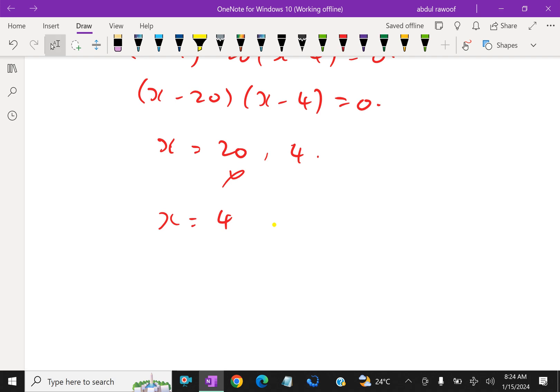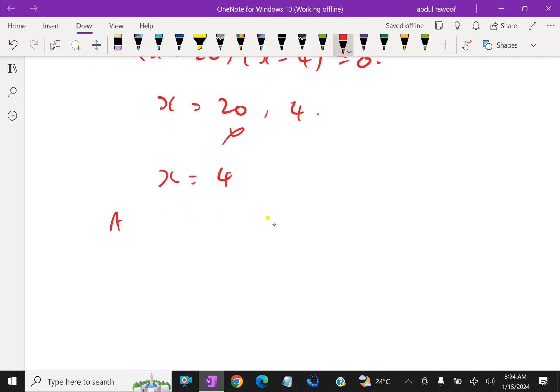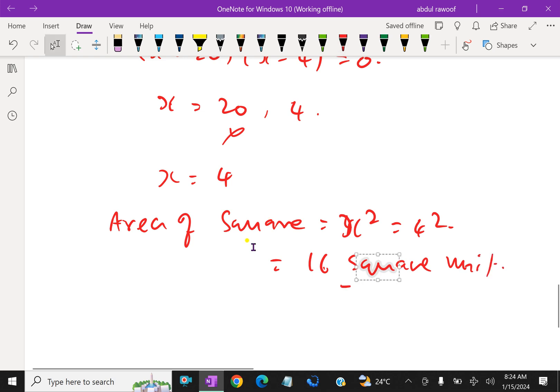Now we need area of the square, which is x squared. That is x squared which is equal to 4 squared. Therefore it is equal to 16 square units. Now we got the area of that square as 16 square units.